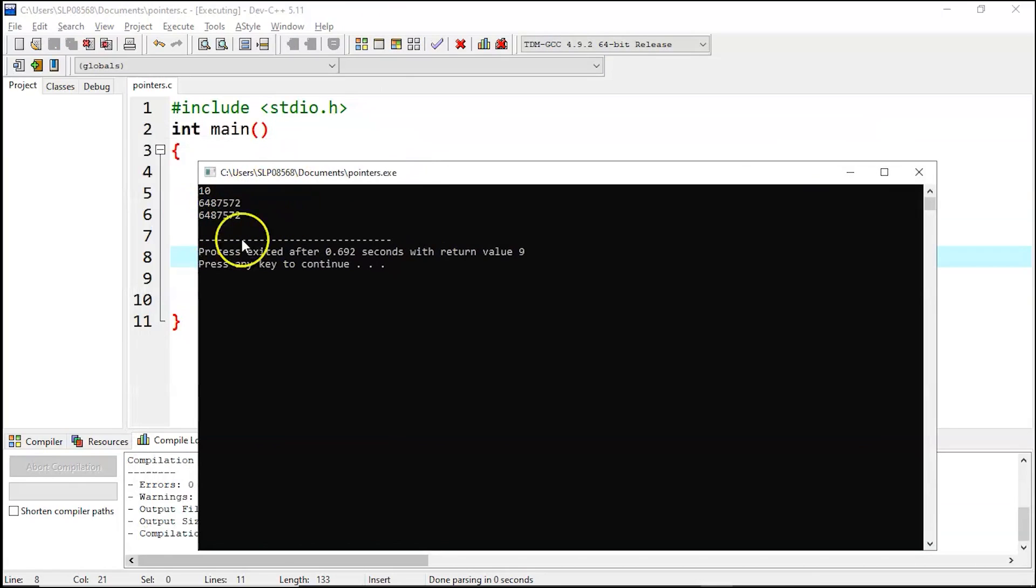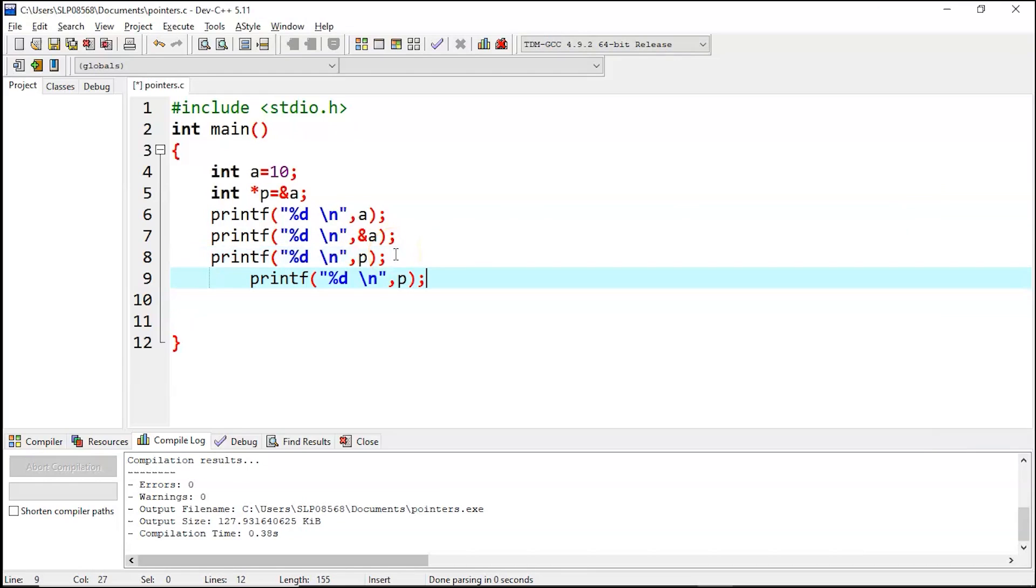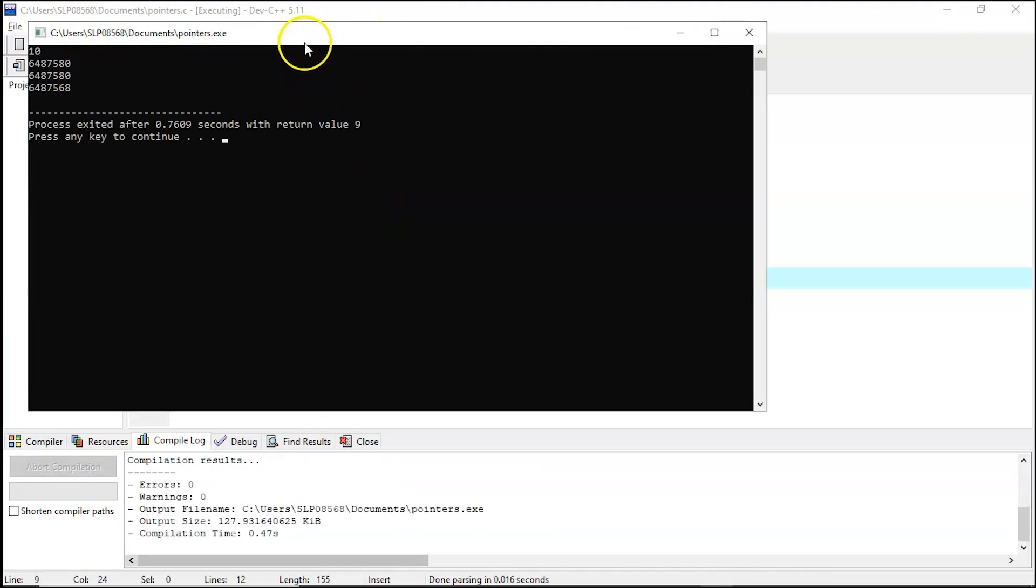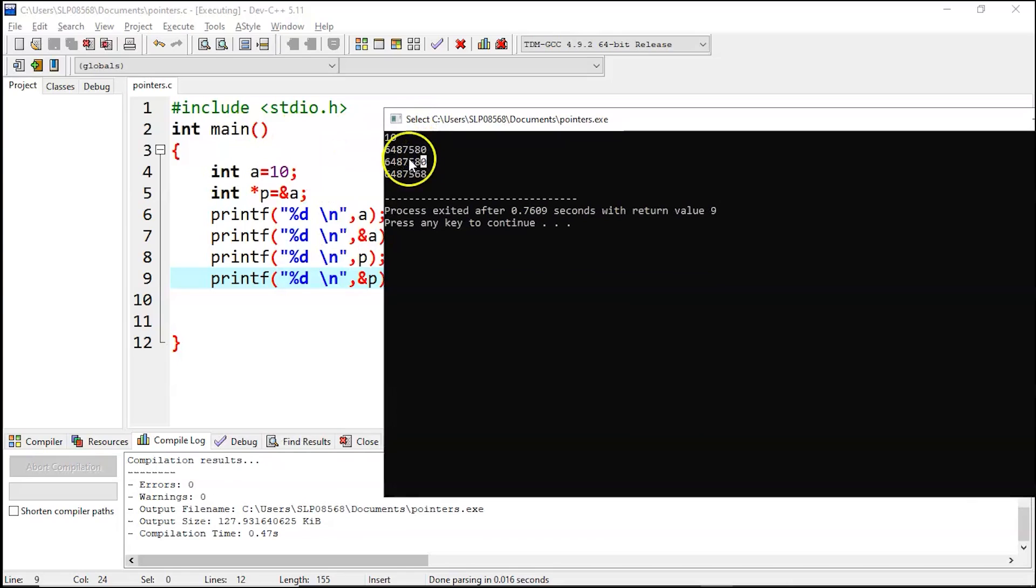So as you can see, what p is holding here is the address of variable a. You can see the same address. This is the address where 10 is stored, and p is holding the address of a. Now let's see where p is stored at. So here this is the variable 10, and this is the address where a is stored at. This is what p is holding - the address of a - and this is where p is stored at. I hope it's clear.